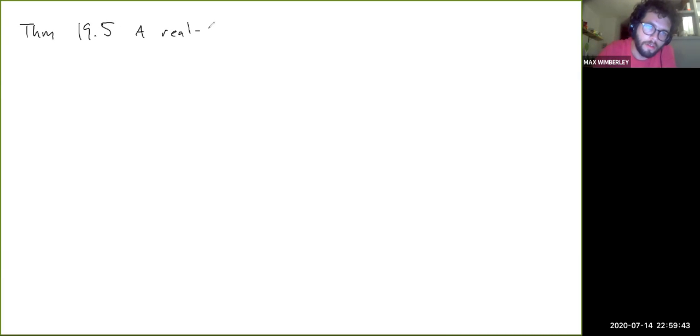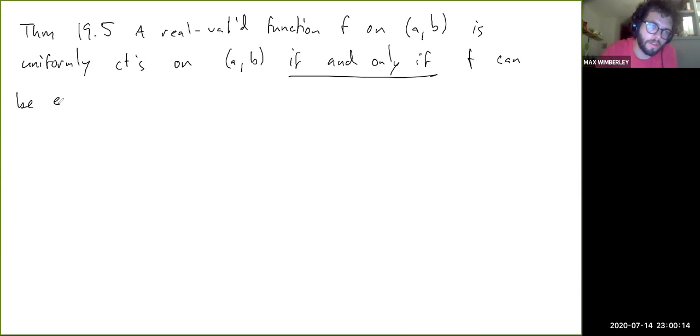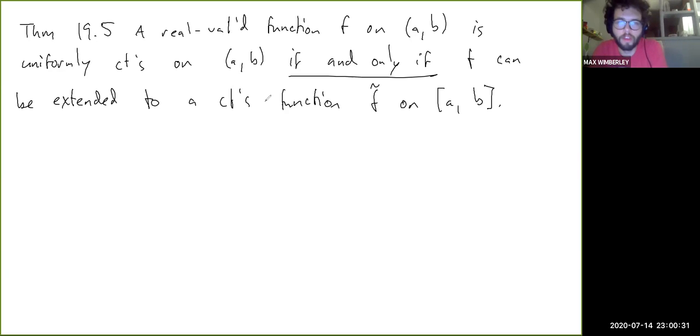So let me state the theorem. So this is theorem 19.5. A real valued function f on (a,b) is uniformly continuous on (a,b) if and only if f can be extended to a continuous function f tilde on [a,b], the closed interval. Okay. So that's the theorem.